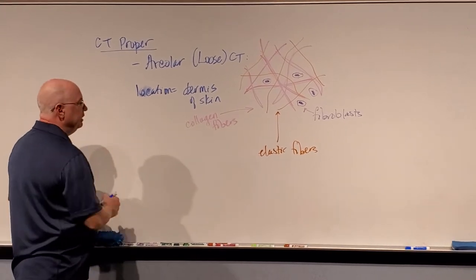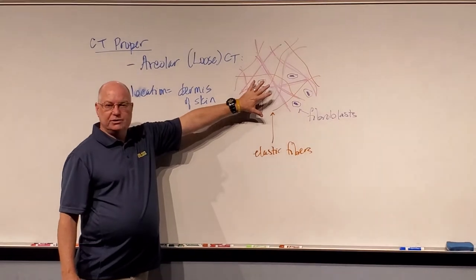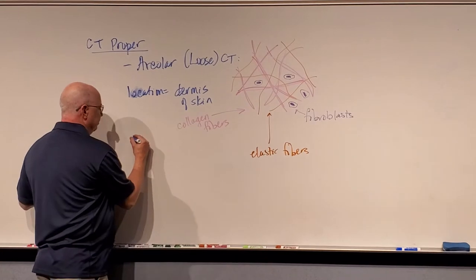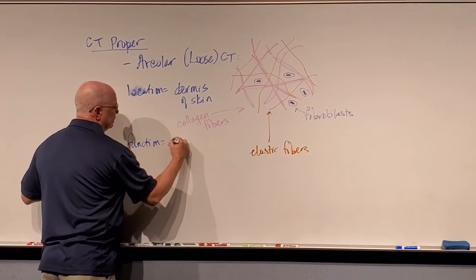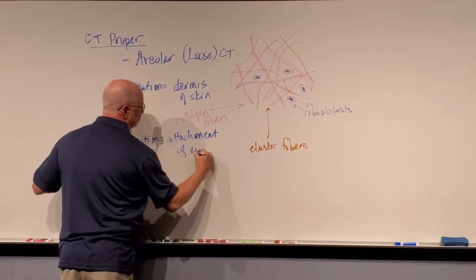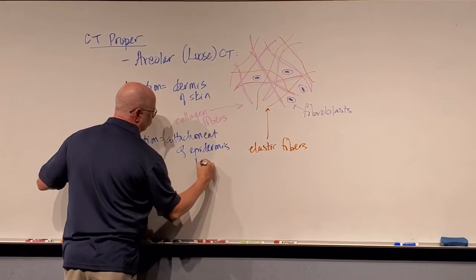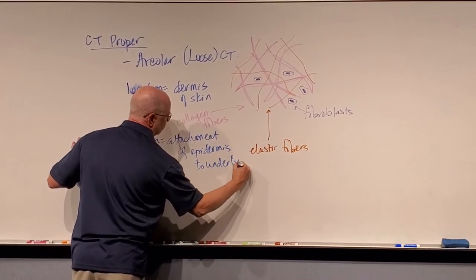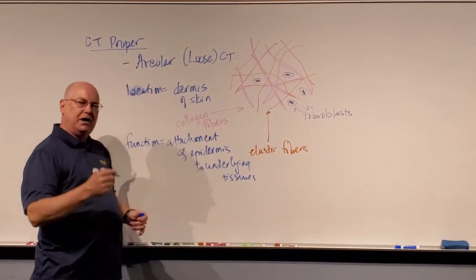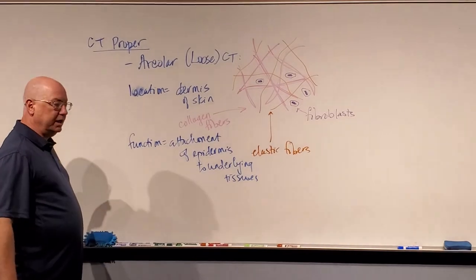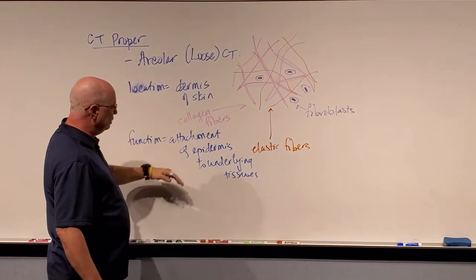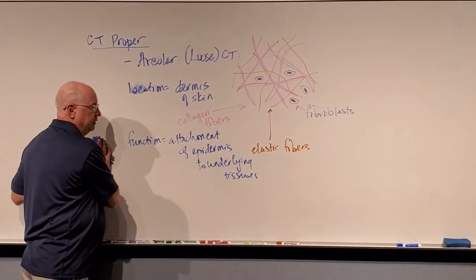The function is strength and flexibility for attachment of the dermis to the underlying connective tissues. So the major function of this tissue is attachment of the epidermis to underlying tissues so that your epidermis just doesn't slide off your body. That's it for areolar connective tissue. You should know what it looks like, what's found in it, and its location and function.